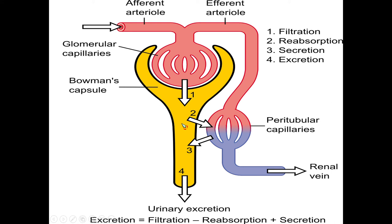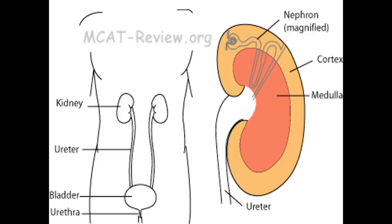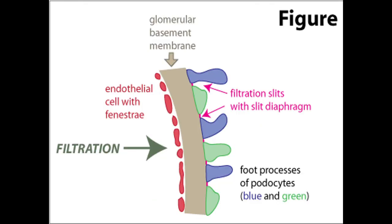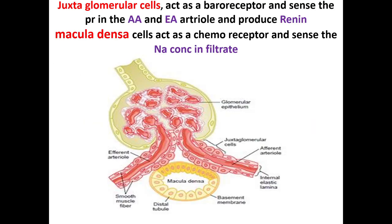The filtrate having low sodium enters the loop of Henle, takes a U-turn, and moves up to the juxtaglomerular apparatus where the macula densa cells are present. These macula densa cells immediately sense that the amount of sodium coming up in the filtrate is less. They initiate a signal that reaches the juxtaglomerular cells, which immediately produce renin. Renin converts angiotensinogen into angiotensin 1.